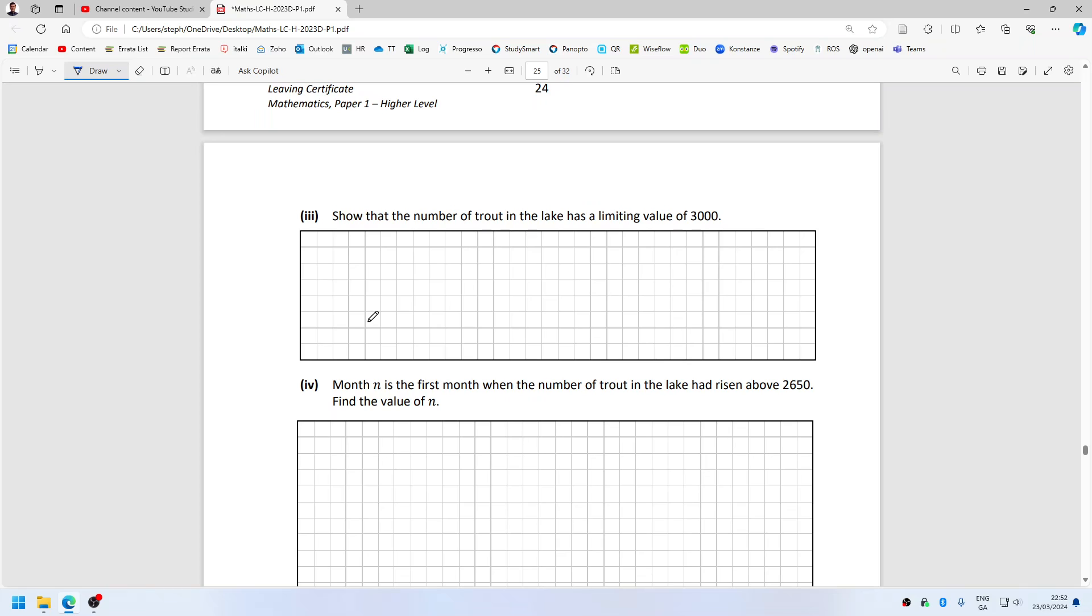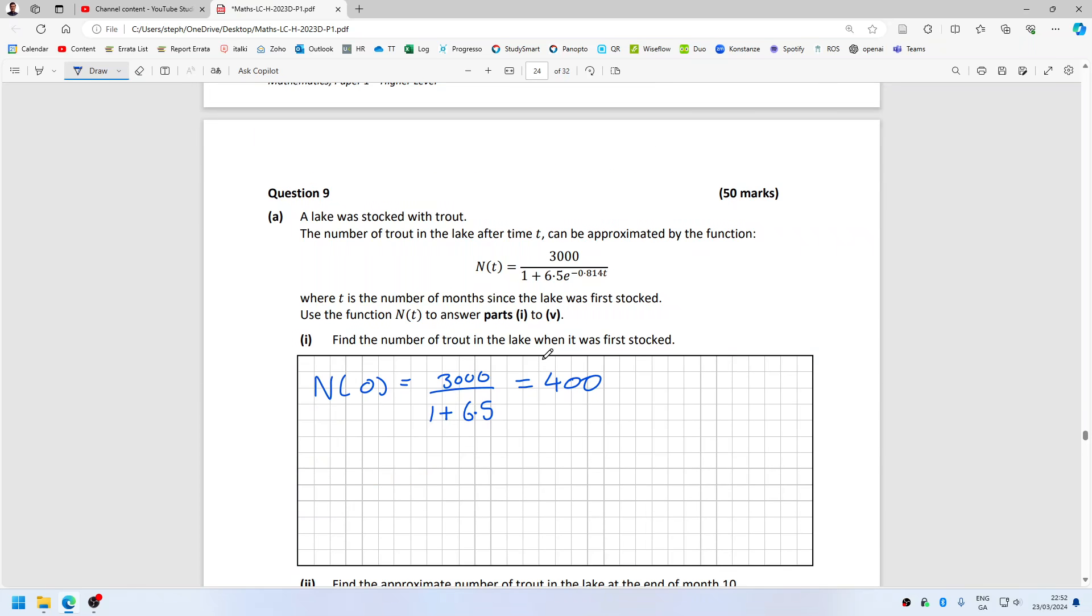N is going to infinity, so like the limit as t goes to infinity of 3000 over 1 plus 7.5e to the power minus 0.814t.